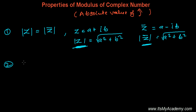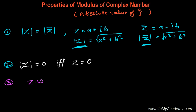The second property is that the modulus value of any complex number will be zero if and only if the complex number is itself zero. That is the only condition. The third property is that the absolute value of the product of two complex numbers equals the product of the individual absolute values of those two complex numbers.